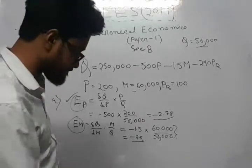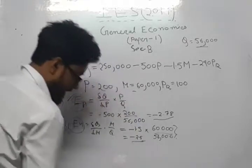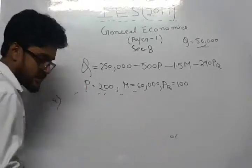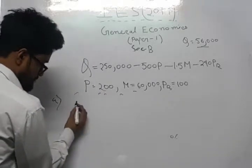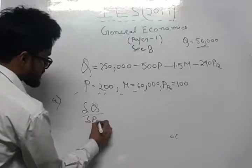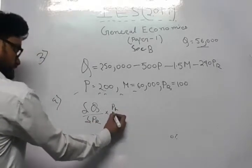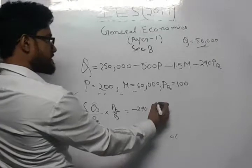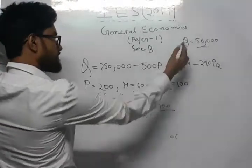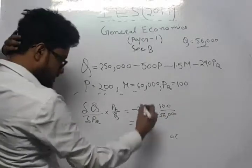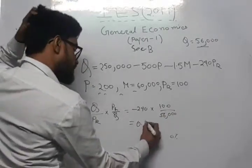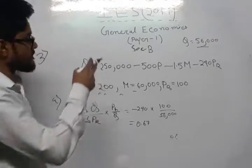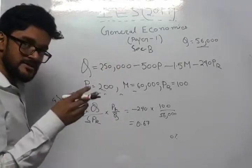Now we find EPR, the cross-price elasticity. The formula is change in Q by change in PR, multiplied by PR by Q. Differentiating with respect to PR gives 240. With PR = 100 and Q = 56,000, we get the value of EPR to be 0.43.